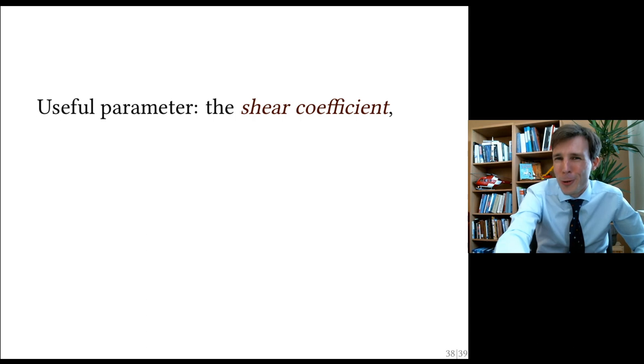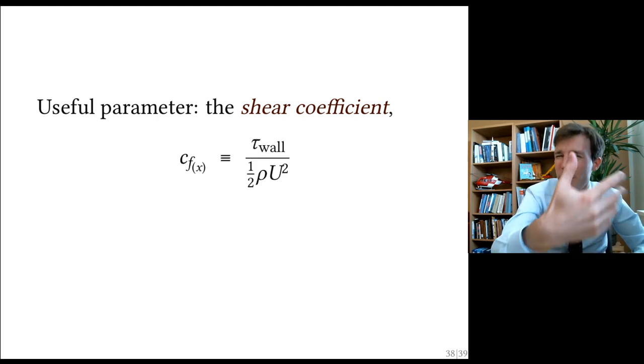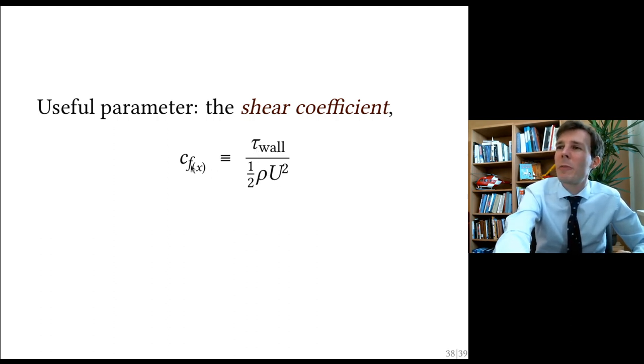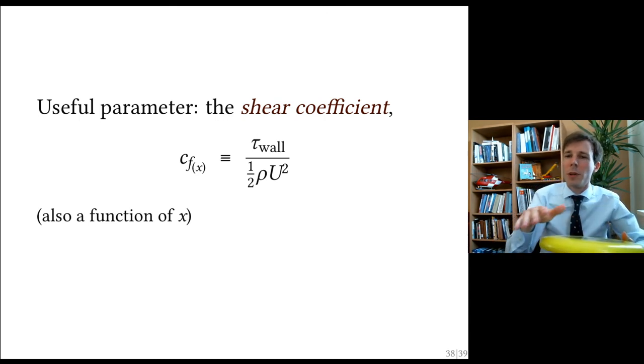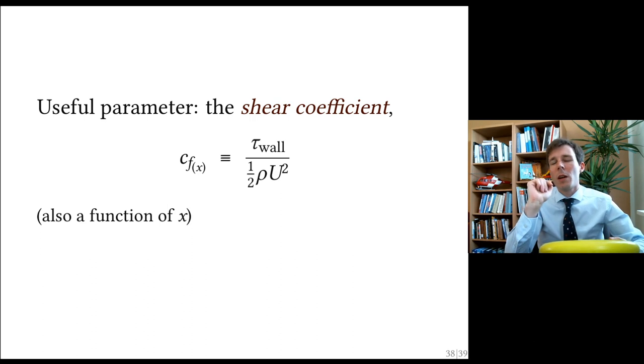And as usual in fluid mechanics we like to non-dimensionalize things and in particular the shear, and so we coefficientize it. So we say tau wall divided by one half of rho times the main fluid velocity squared, this is going to be called the coefficient, the shear coefficient cfx, and it's also a function of x. So as we study the boundary layer and we look into the main characteristics and the main parameters of the boundary layer this is what we're going to try to quantify: how much friction is exerted by the boundary layer on top of the surface. So this is it, this is your first short guided tour about the boundary layer in fluid mechanics.